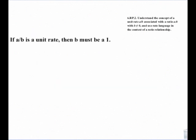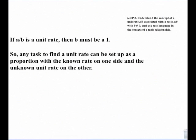If A over B is a unit rate, it makes sense that B has to be a 1. So any task to find a unit rate can be set up as a proportion with the known rate on one side and the unknown unit rate on the other. For example, if we know some ratio C over D and we want to know what the unit rate is, we set it up with the unknown over 1 — that's the A we're looking for.